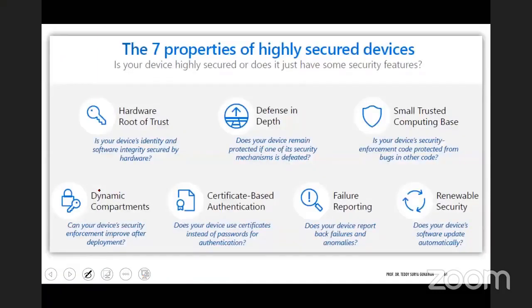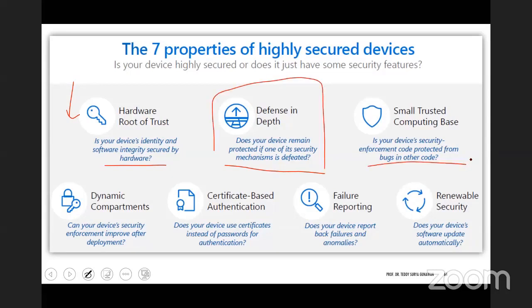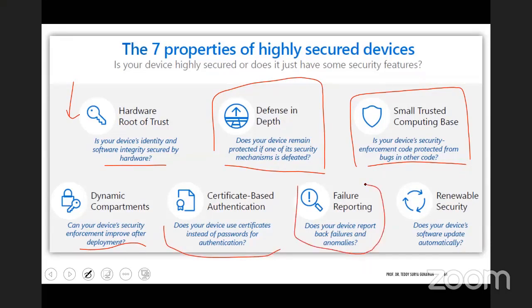Microsoft's seven properties of a highly secure device are: hardware root of trust — device identity and software integrity secured by hardware; defense in depth — device remains protected if one security mechanism is defeated; small trusted computing base — critical code protected from bugs in other code; dynamic compartmentalization — security boundaries enforced after deployment; certificate-based authentication instead of passwords; failure reporting so the company can update and upgrade devices; and renewable security — device software updates automatically. This framework from Microsoft research in 2017–2018 is also used by the US military.